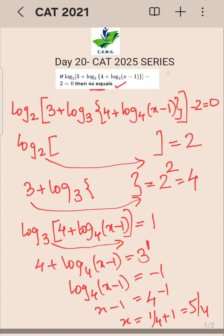Now the question is 4x ka value equals how much. So 4x ka value is 4 into 5 by 4, so 4 and 4 cancel, your net answer is 5, that is your value.